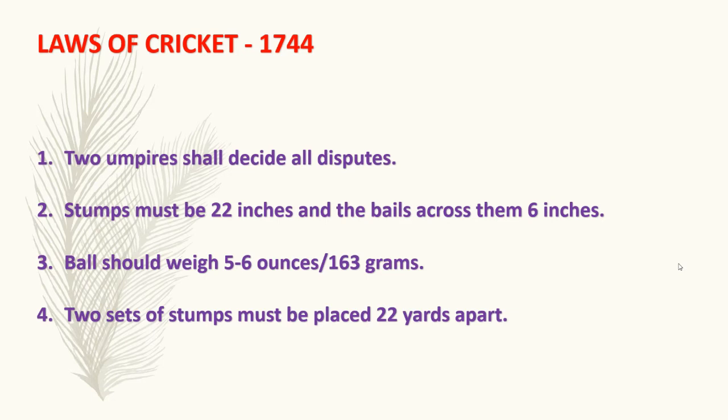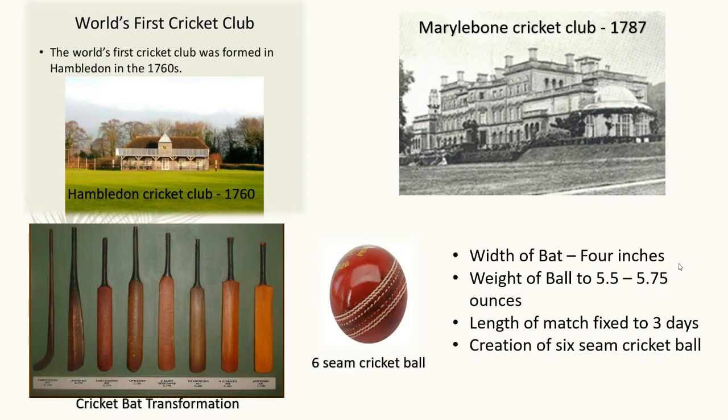There should be two sets of stumps placed with a distance of 22 yards between them. The size of the ball must be between five to six ounces — that is given as 163 grams. Clubs were also formed: the world's first cricket club was formed in Hambledon in the 1760s.